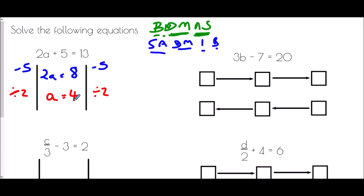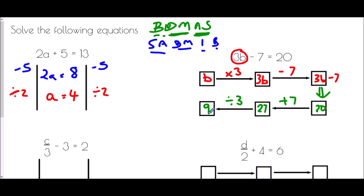For the flow chart with 3b minus 7 equals 20, we begin with b. The first thing that happened to b is it was multiplied by 3 to give 3b, then we took away 7 to get 3b minus 7. According to our equation that equals 20. Working backwards: instead of taking away 7 we add 7, so 20 plus 7 is 27. Then instead of multiplying by 3 we divide by 3: 27 divided by 3 is 9. Therefore b equals 9.